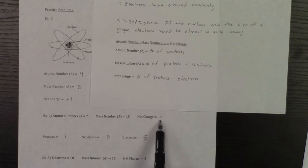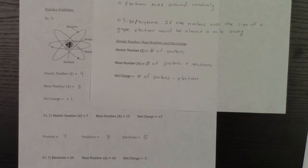And finally, if my net charge is a plus two, that means I have two more protons than electrons, and that's why my number of electrons is five.